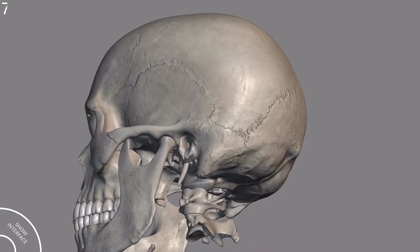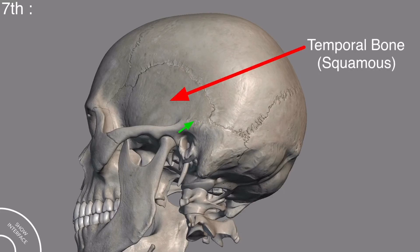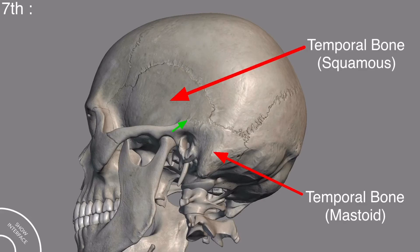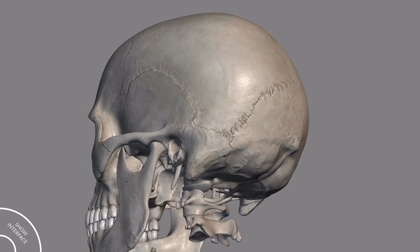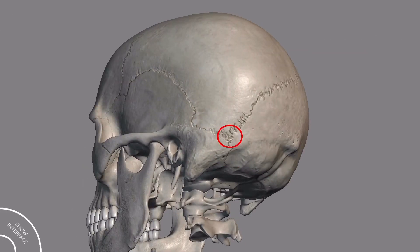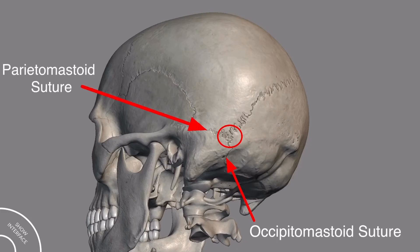There is also a suture present between the squamous and the mastoid part of the temporal bone, called the squamomastoid suture. This suture is interesting because it is present between the two parts of the same temporal bone. The point where the occipitomastoid suture, parietomastoid suture, and the lambdoid suture meet is called asterion.